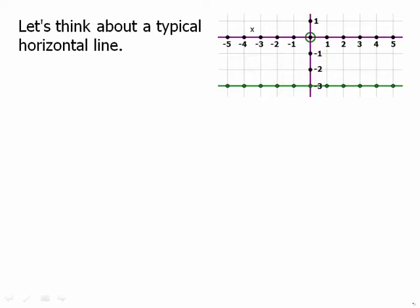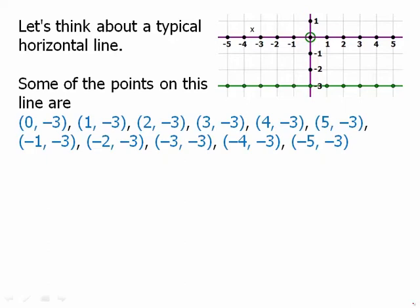Let's think about a typical horizontal line. So here's a horizontal line, and I've highlighted the points on the line. Let's just think about the coordinates of these points. Some of the points on the line are things like (0, -3), (1, -3), (2, -3), etc.